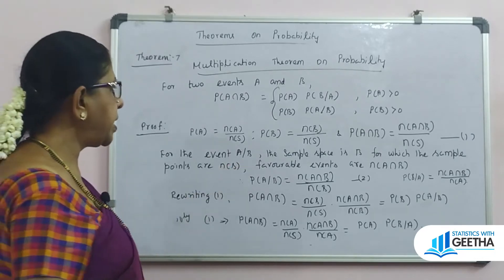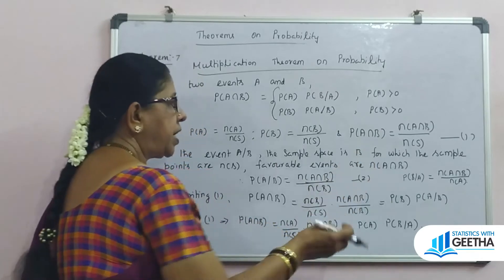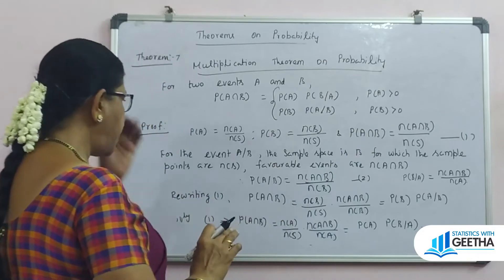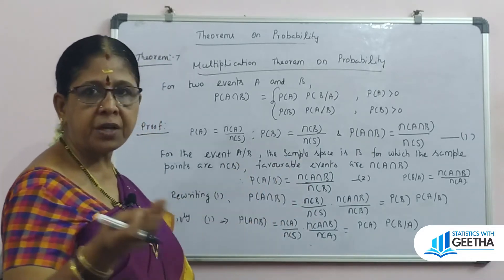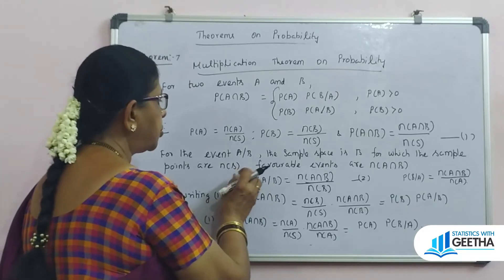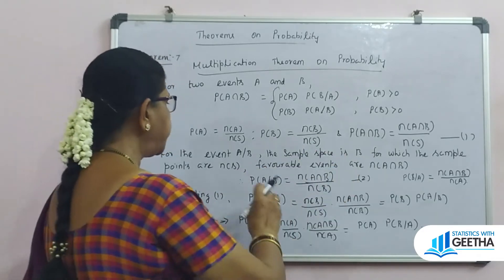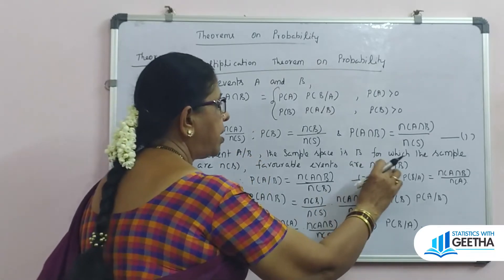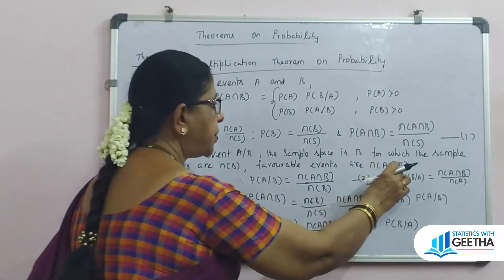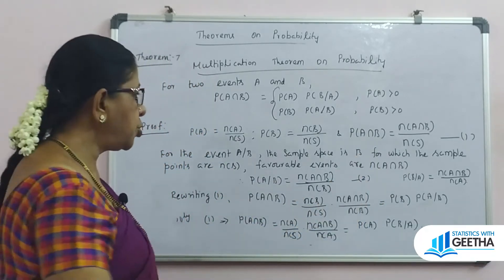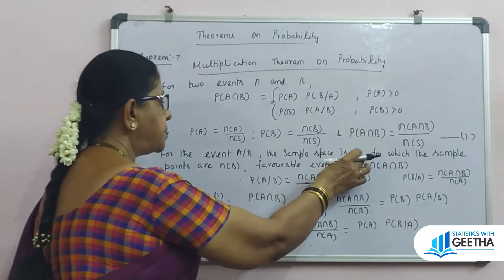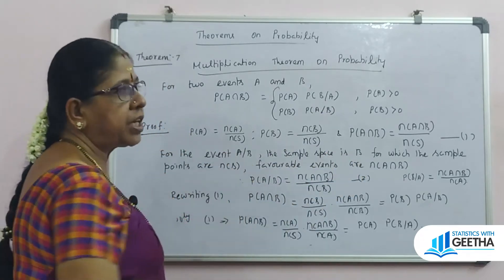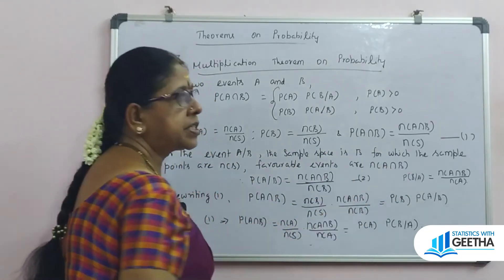For the conditional event A given B, the sample space is B, because event B has already happened. Therefore the sample points are n(B). The favorable events corresponding to A given B are n(A intersection B), since B has already occurred. So the probability of A given B equals n(A intersection B) divided by n(B).